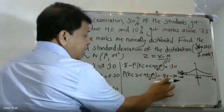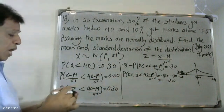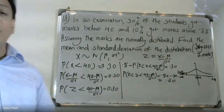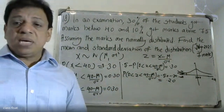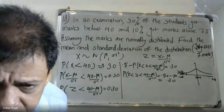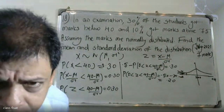We now look up the value of 40 minus mu by sigma in the standard normal table, locating the value corresponding to 0.20.